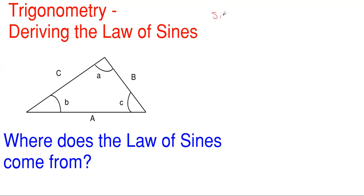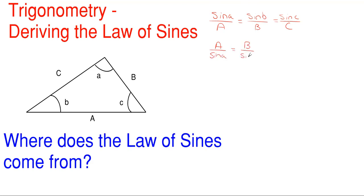You can either have it as the sine of angle A over side A, which is equal to the sine of angle B over side B, which is equal to the sine of angle C over side C. Or you could write it as side A over the sine of angle A, equal to side B over the sine of angle B, which is equal to side C over the sine of angle C. Both of these are the law of sines. The first one is the technical way it's written, but the other one is just as good.